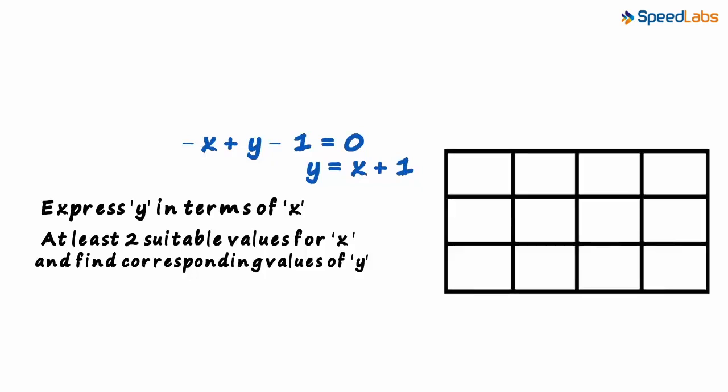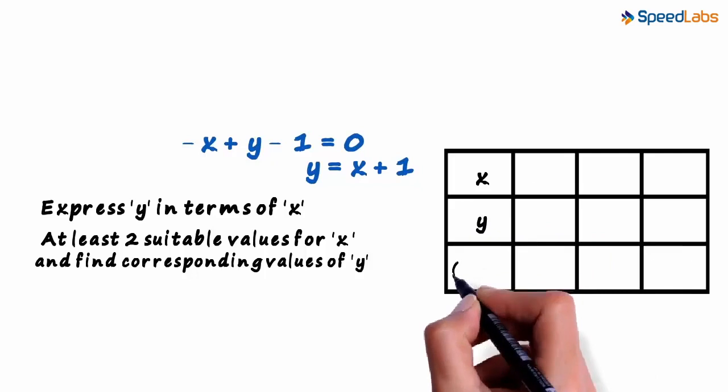Let's draw a table. In the first row, let's consider values of x. And in the second row, we find corresponding values of y. And in the third row, we write the coordinates of the point x comma y.